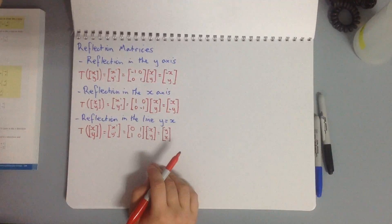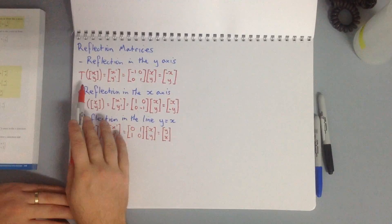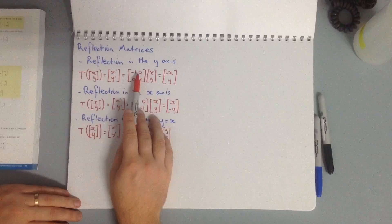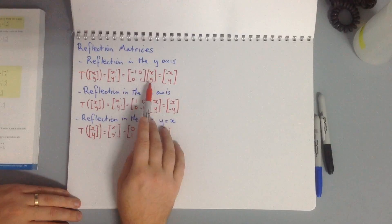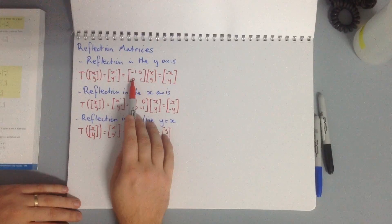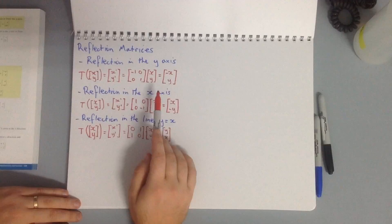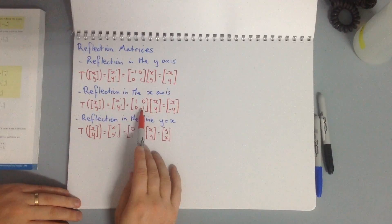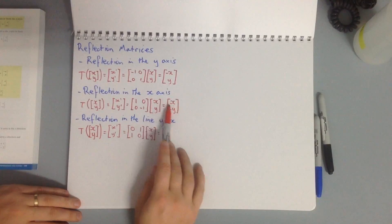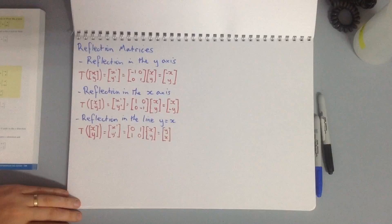Now for reflection matrices. For a reflection in the y-axis, the transformation matrix is [[-1, 0], [0, 1]]. Running and diving: -1×x gives -x, and 0×y gives 0; then 0×x and 1×y gives y. For reflection in the x-axis, it's [[1, 0], [0, -1]], giving x and -y.